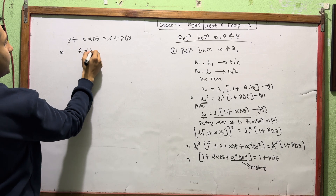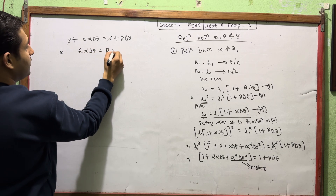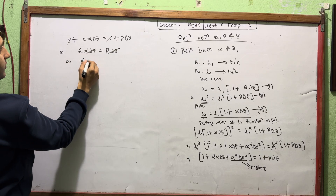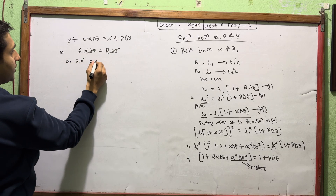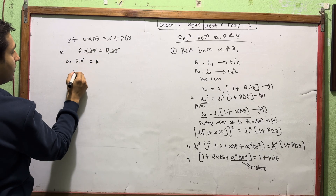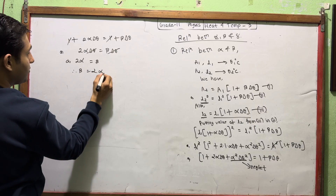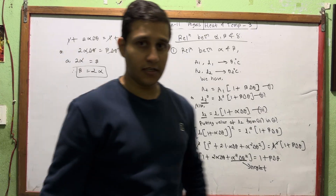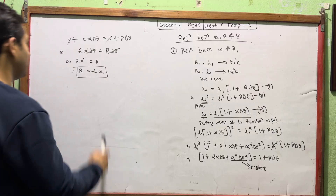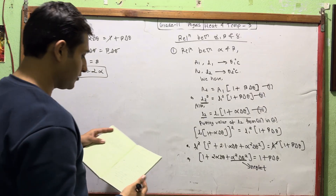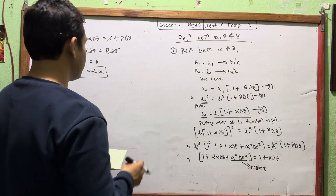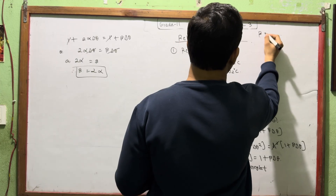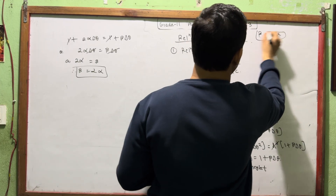Canceling the 1 and del theta from both sides, we get 2 alpha equals beta. Therefore, beta is equal to 2 alpha. We have derived the relationship between beta and alpha.